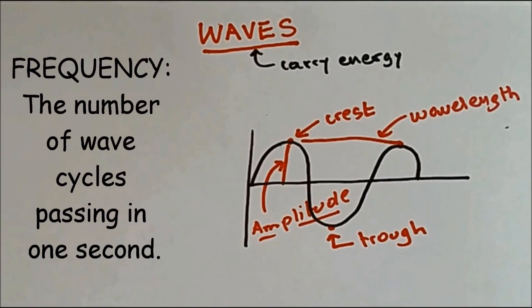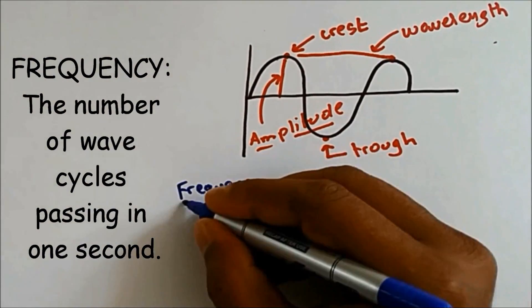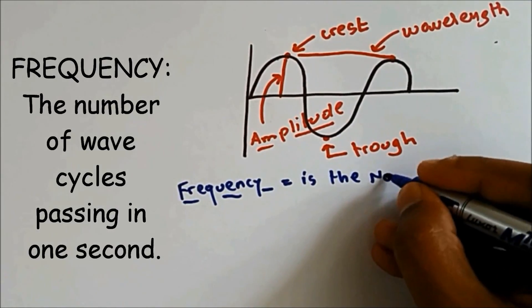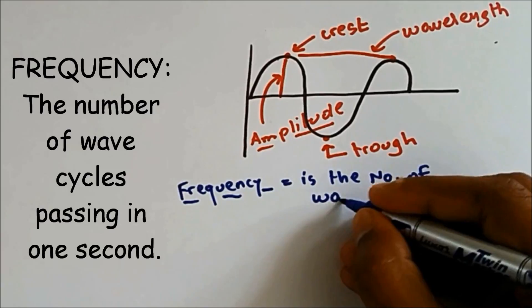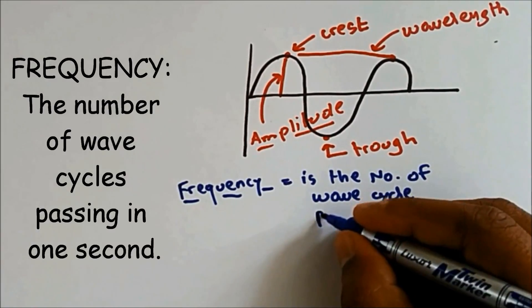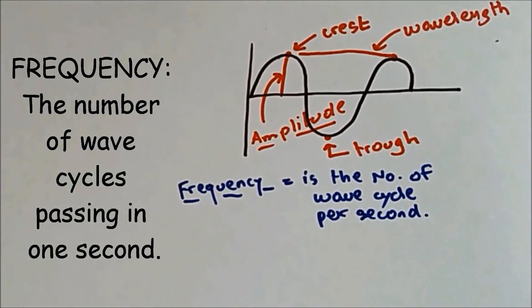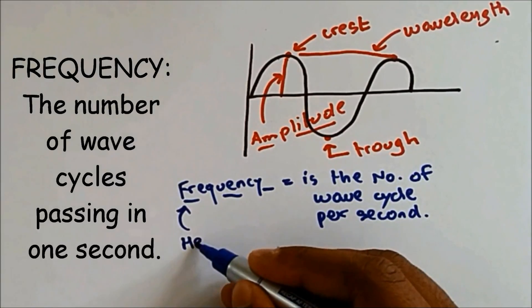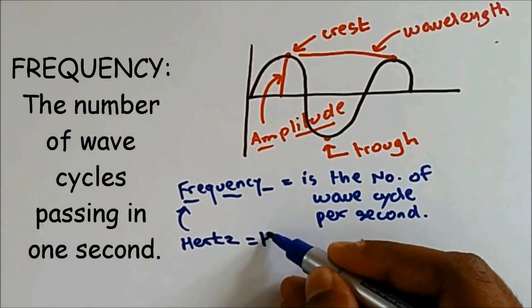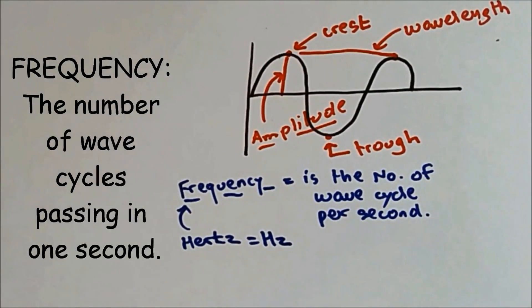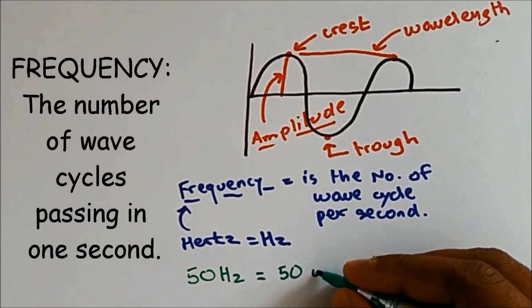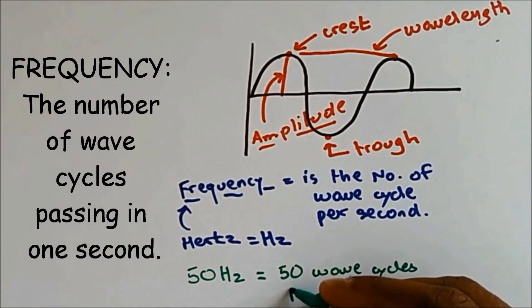Now I'd like to talk about the frequency. The frequency is the number of wave cycles per second. It's the number of waves passing in a second. The units of frequency is hertz. 50 hertz, which can be also written as Hz, means 50 wave cycles per second.